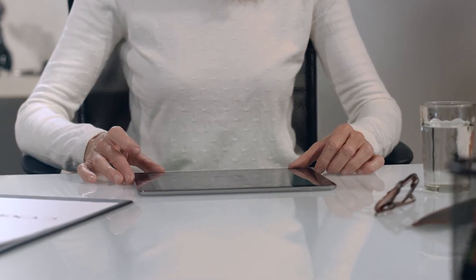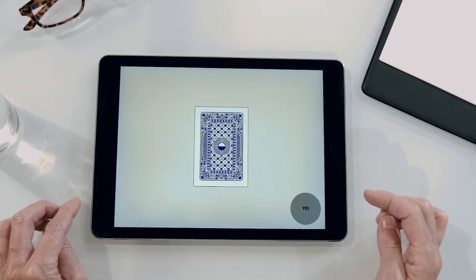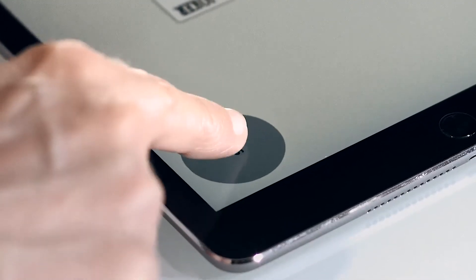The first test is called detection and measures processing speed. The card will flip over and as soon as it does, the participant must press the yes key.